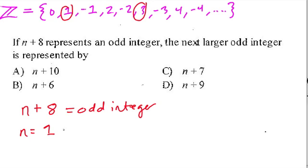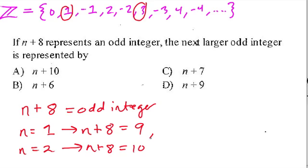Well, if n equals 1, then n plus 8 does give us an odd integer. It gives us a 9. But what about if n equals 2? Well, then n plus 8 equals an even integer.